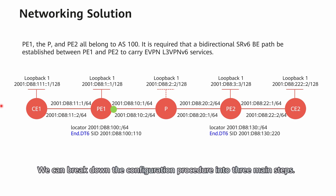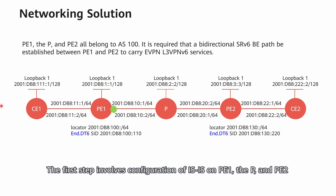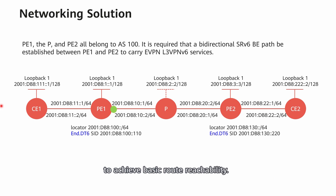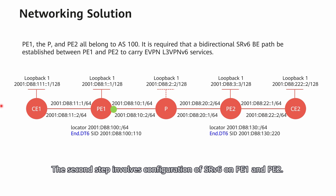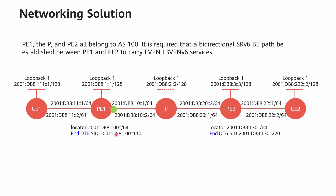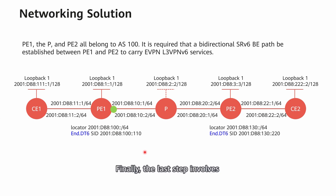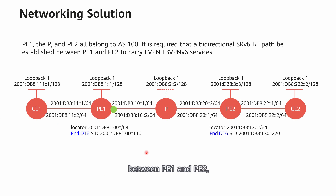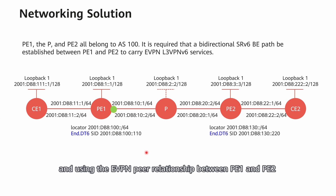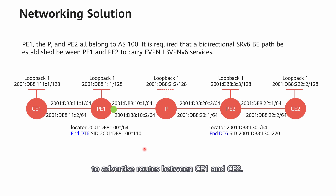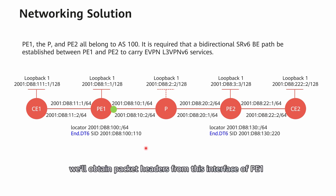We can break down the configuration procedure into three main steps. The first step involves configuration of IS-IS on P1, P, and P2 to achieve basic router reachability. The second step involves configuration of SRV6 on P1 and P2. Note that in SRV6 BE scenarios, SRV6 does not need to be configured on the P. Finally, the last step involves establishing a BGP-EVPN peer relationship between P1 and P2, configuring CE access, and advertising routes between CE1 and CE2. For ease of understanding, we'll obtain packet headers from an interface of P1 for in-depth packet parsing.